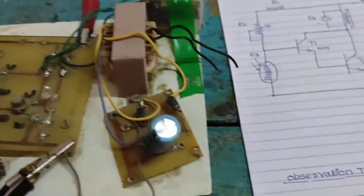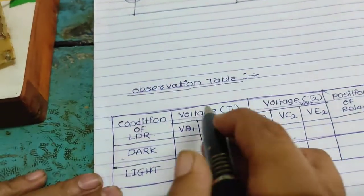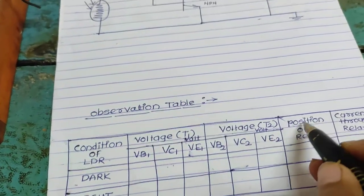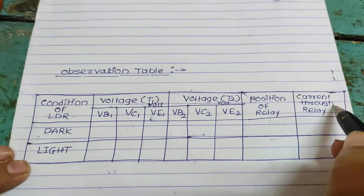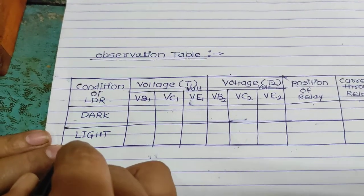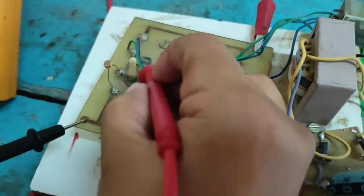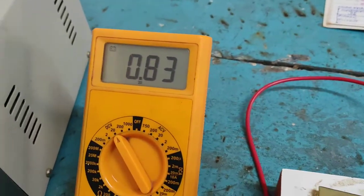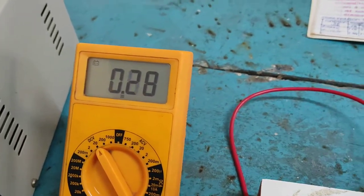Observation table. Light condition. Voltage across T1. Voltage across T2. Position of relay and current through relay. Then first condition, light incident on LDR. VB is measured here using digital multimeter. VB1 0.83 volt. Here note down 0.83 volt.